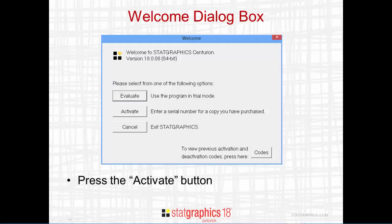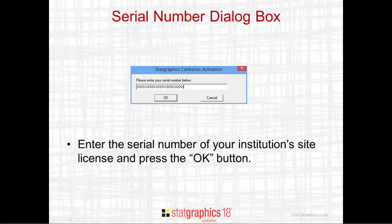The first window displayed by the program is a welcome dialog box. You'll want to press the Activate button. A dialog box will then appear asking you to enter your serial number. You need to enter the serial number associated with your institution's site license, then press OK.